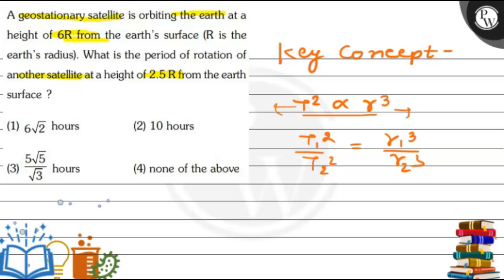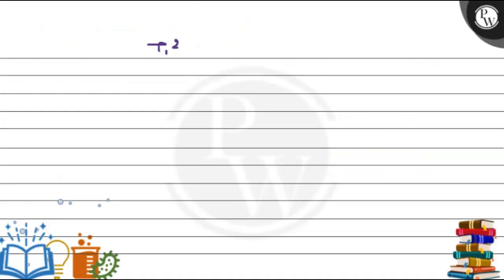We have given two satellites where T1 is the first and T2 is the second time period. Let's solve the question. T1 squared upon T2 squared is equal to R1 cubed upon R2 cubed.